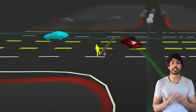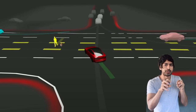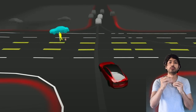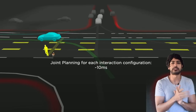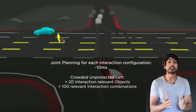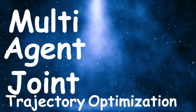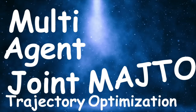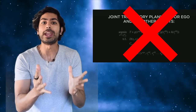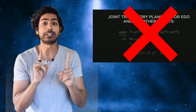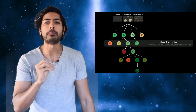At any given intersection, drivers are subconsciously predicting where each object, be it a car or pedestrian in the scene, will move to. And a self-driving car must do this as well, in under 10 milliseconds for safety. This can be considered a multi-agent joint trajectory optimization problem. We can compute all the possible paths, but that would be way too expensive. Tesla instead uses a neural network-guided tree search to only compute the most probable movements.